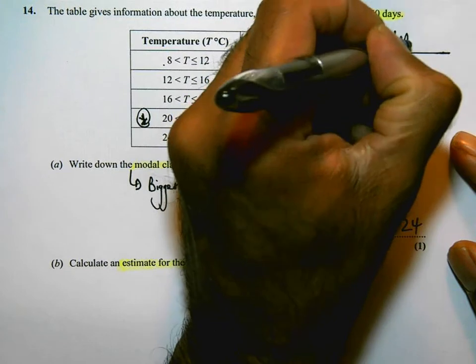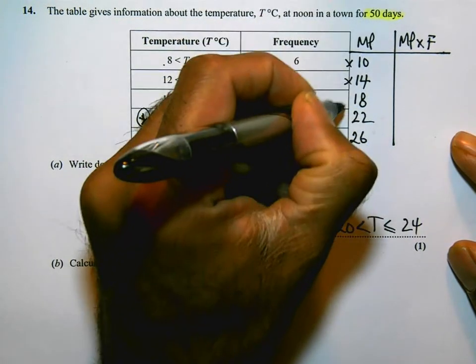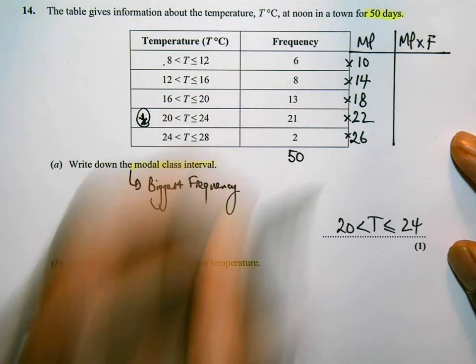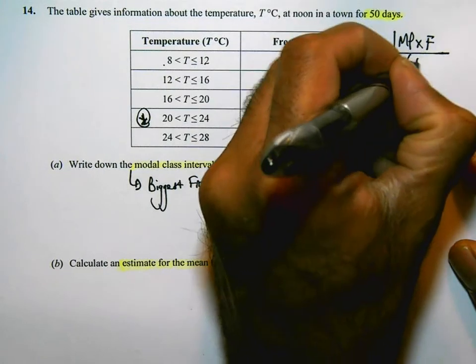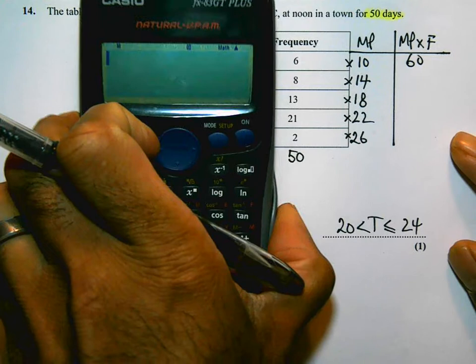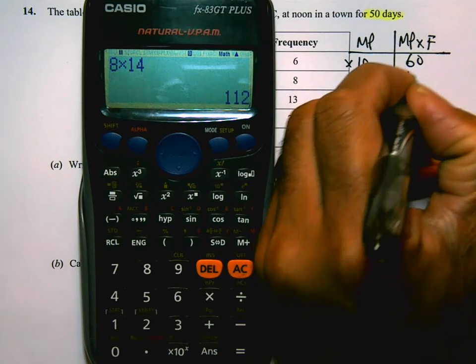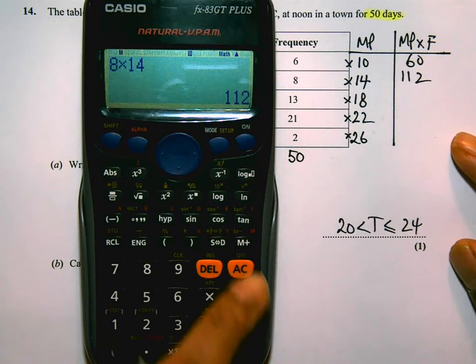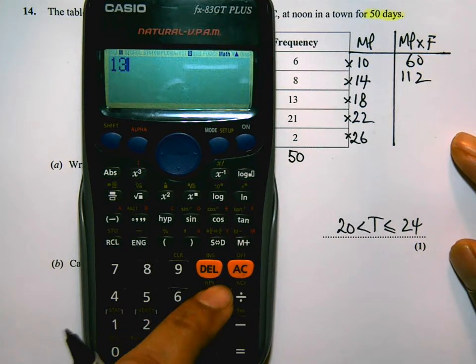I'm going to do midpoint times frequency. I'm going to times each of these. And I can use my calculator for that. The first one is straightforward. 6 times 10 is 60. But I'm going to use my calculator for the rest. 8 times 14, that's 112.